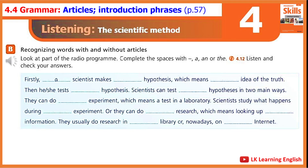4.12. Lesson 4.3. Grammar for Listening: Articles, Introduction Phrases. Exercise B. Listen and check your answers. Firstly, a scientist makes a hypothesis, which means an idea of the truth. Then he or she tests the hypothesis. Scientists can test a hypothesis in two main ways. They can do an experiment, which means a test in a laboratory. Scientists study what happens during an experiment. Or they can do research, which means looking up information. They usually do research in a library, or nowadays, on the internet.